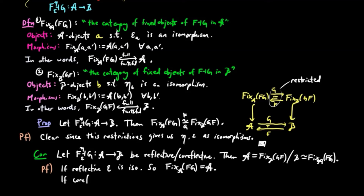And if FG is co-reflective, then eta is an isomorphism, so the fixed objects in B of GF is equal to the category B.